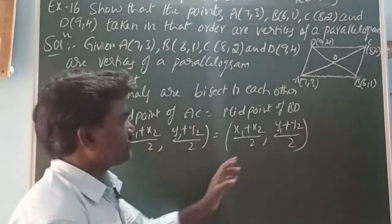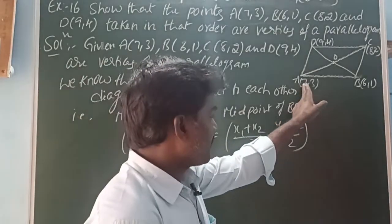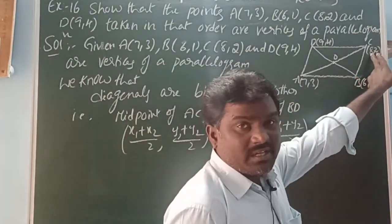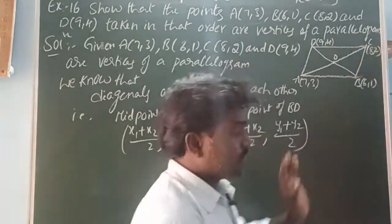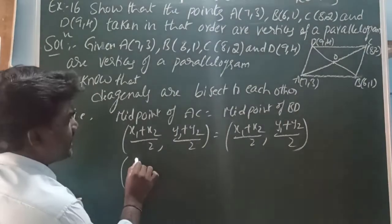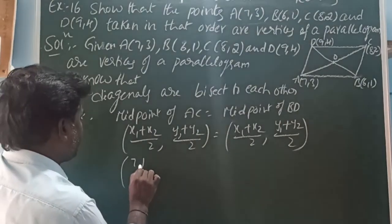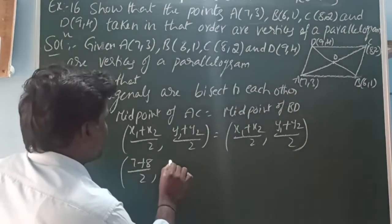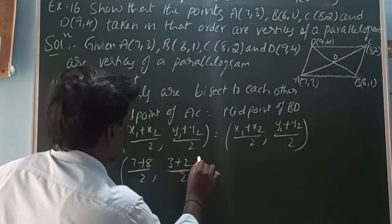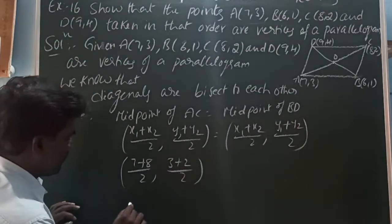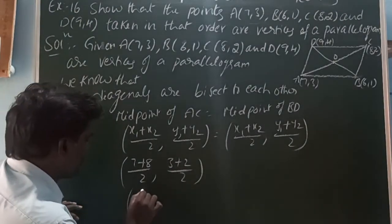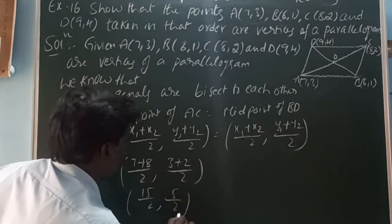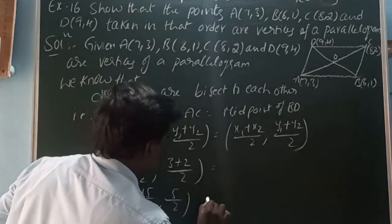In AC: x1 is 7, y1 is 3, x2 is 8, y2 is 2. So the midpoint of AC is (7+8)/2, (3+2)/2, which gives 15/2 and 5/2.